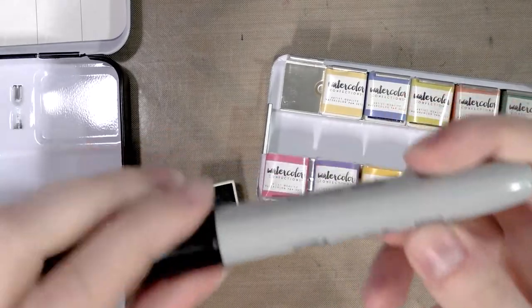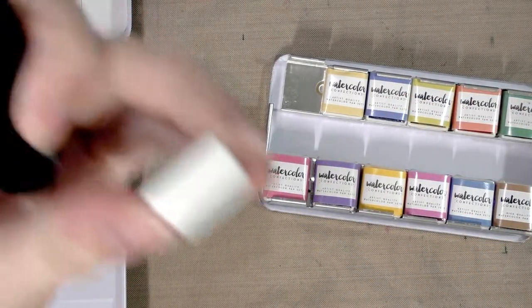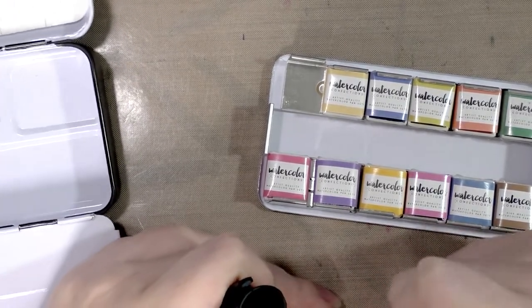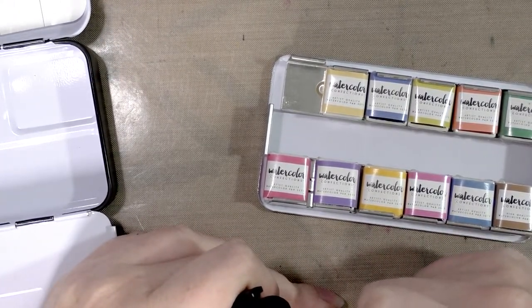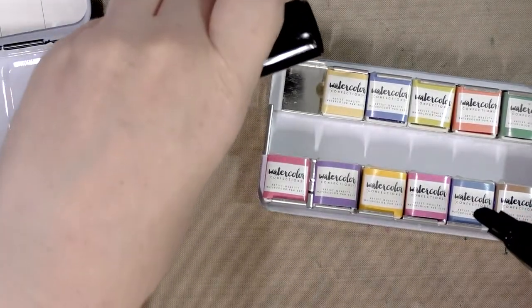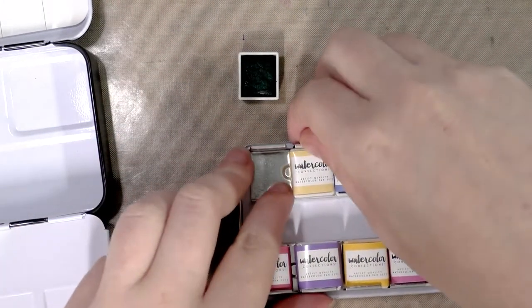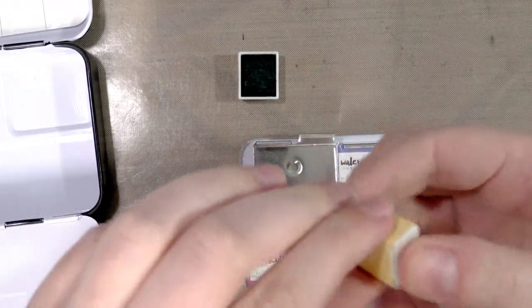Using a Sharpie, I'm going to write on the side the number. I don't know that Prima sells these open stock, so I don't know if we can replace these pans when our colors run out.